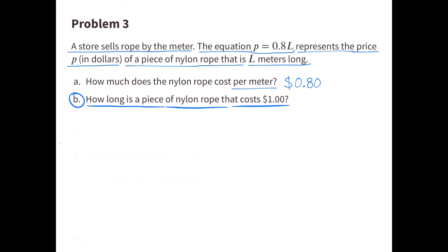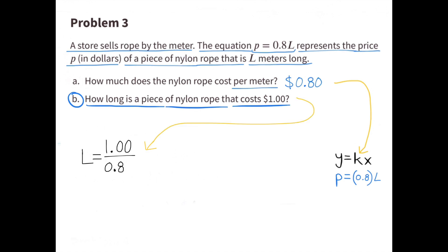b. How long is a piece of nylon rope that costs 1 dollar? What I learned when working on a was that p equals 8 tenths times L. Since there's two equations for each relationship, I can also look at this as L equals 1 over 8 tenths, or L equals 1 divided by 8 tenths.